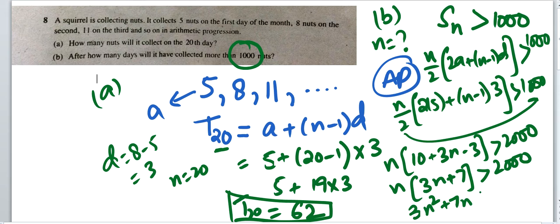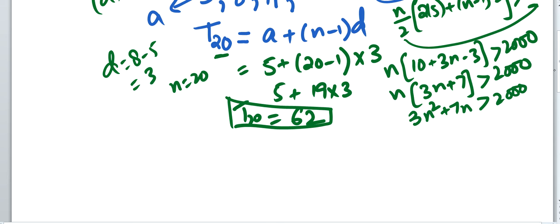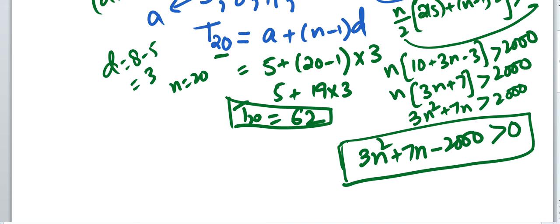Now this is a quadratic inequality: 3n² + 7n > 2000...